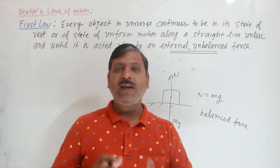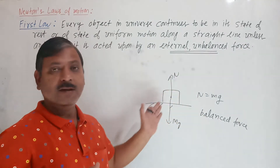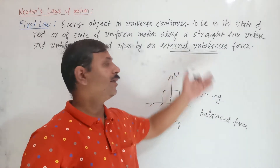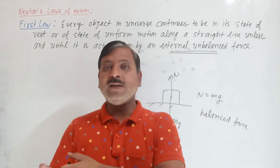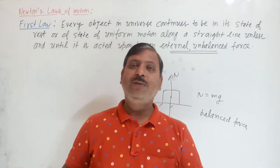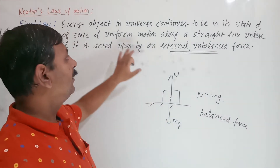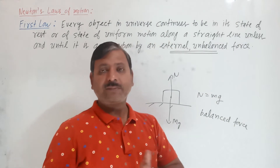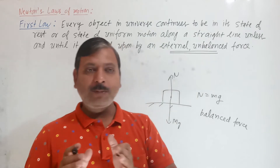If the resultant of all forces is zero, that is balanced force. If the resultant is nonzero, that is unbalanced force. An unbalanced force is required for the change of state of rest or state of uniform motion along a straight line.